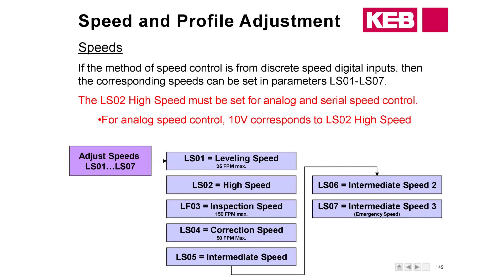A few notes on the speeds: when we were adjusting the demos up here we had to change the high speed. No matter what type of speed control you are using, high speed will have to be set — if it is not set, you will not be able to run. We have a variety of speeds you can set; most are just different terminology. We have a few intermediate speeds that can be used as either an emergency or an ETS, depending on the controller.